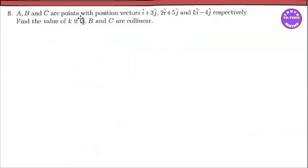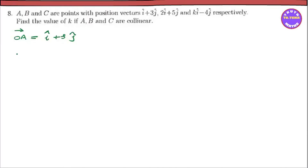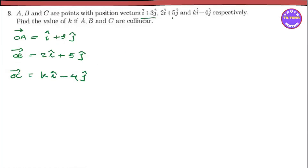This is the second problem. The position vectors are OA, OB, and OC. OA plus 3J, OB vector is equal to 2I plus 5J, and OC vector is KI minus 4J. Find the value of K if A, B, C are collinear.